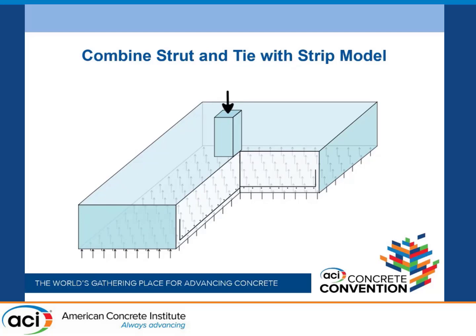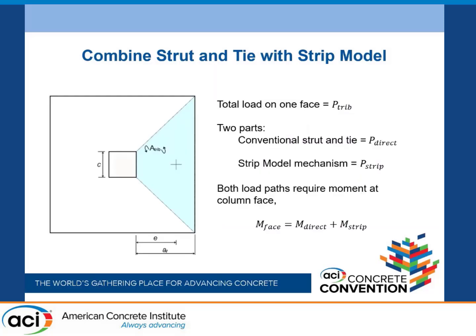It is compatible with conventional strut-and-tie, which is the reason why it is applicable to footings. Here we've got the footing. Our notion is that load comes in and in the shadow of the column it's just going to come straight down like a very direct strut. We can also have other struts. You can imagine doing a strut-and-tie model and mapping out the whole thing. We're saying you only have to model part of the load this way because some more load could come in via the other mechanism. The two mechanisms can coexist quite happily.